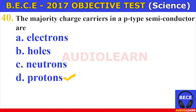Number forty. The majority charge carriers in a p-type semiconductor are A. electrons, B. holes, C. neutrons, D. protons. The answer is D. Protons. The majority charge carriers in a p-type semiconductor are protons.